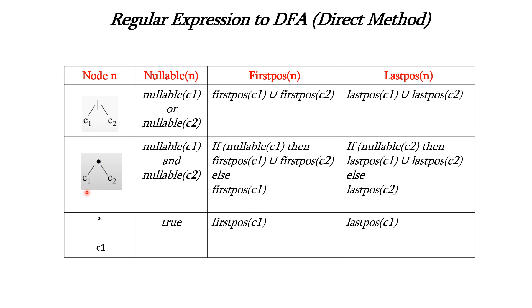But if the left-hand side C1 is nullable, then we have to union the first position of C1 and the first position of C2. For the closure operator, whatever applies to C1 is carried forward to the closure as well. So the first position of the closure operator will be first position of C1.